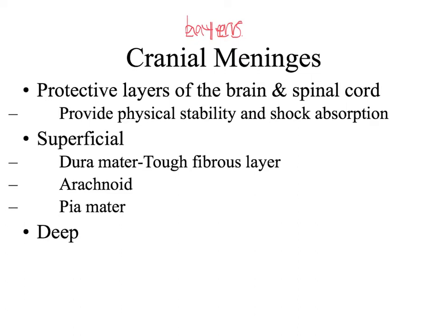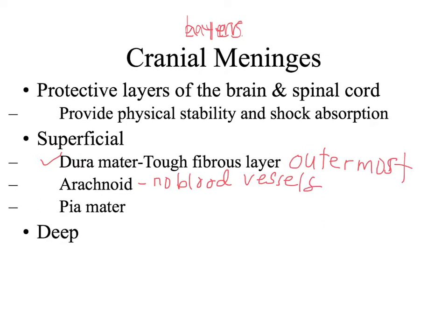Looking from the most superficial to the deepest layers: the first is the dura mater, which is the outermost layer. Then we have the arachnoid, a very thin web-like membrane that does not have blood vessels. And then we have the pia mater, which is very thin and contains many nerves and blood vessels that nourish the underlying cells of the brain and spinal cord.